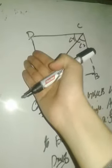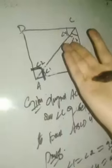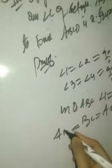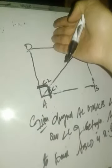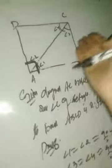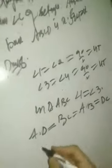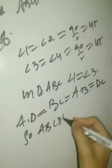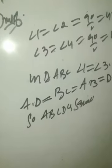Therefore BC equals AB. But BC equals AD, because opposite sides of a rectangle are equal. And AB equals DC, because opposite sides of a rectangle are equal. So we have proved AB equals BC equals CD equals DA — all sides are equal. Since each angle is already 90° as this is a rectangle, ABCD is a square.